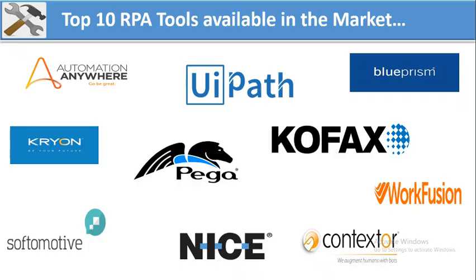There are so many automation tools in the market. Here are the top 10 RPA tools available currently: Automation Anywhere, UiPath, Blue Prism, Kofax, Pega, Kofax, WorkFusion, Contextor, NICE, and SoftMotive. I have taken this top 10 list from Google.